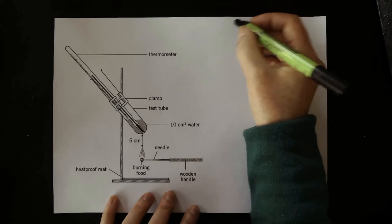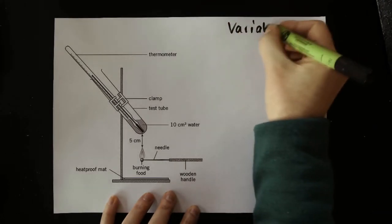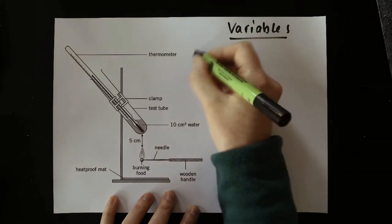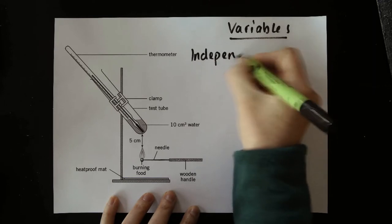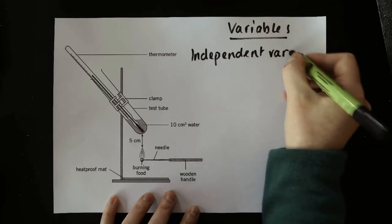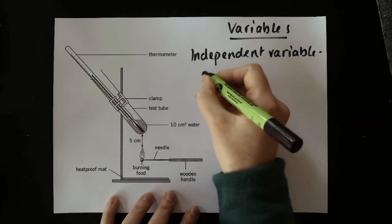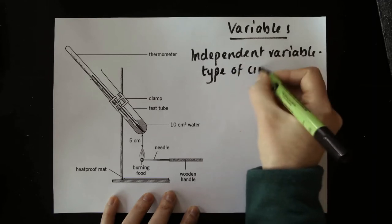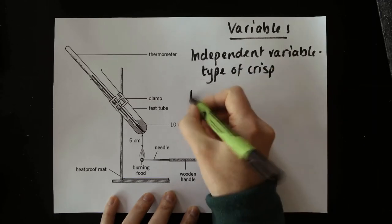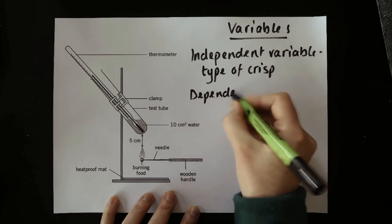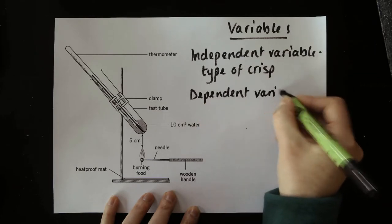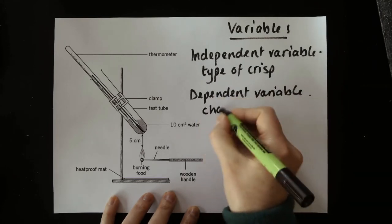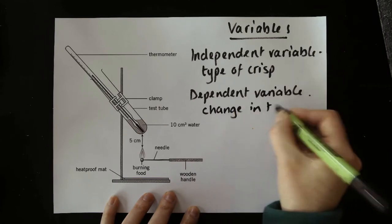So before I start the experiment I need to make sure that I have planned my variables. So the independent variable is the variable that I am going to change. And every time I change this experiment I am going to change the type of crisp. That's what I'm going to investigate. The dependent variable is the variable I'm going to record and measure. What am I going to write down in the results table? I am going to write down the change in temperature of the water.